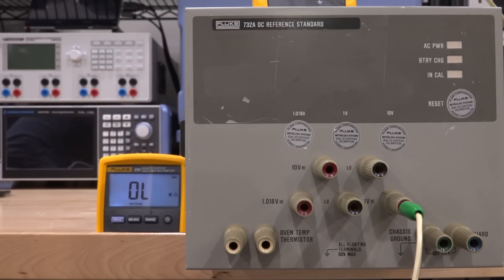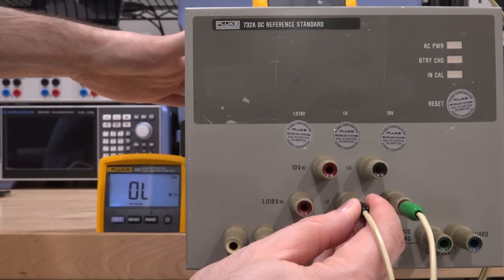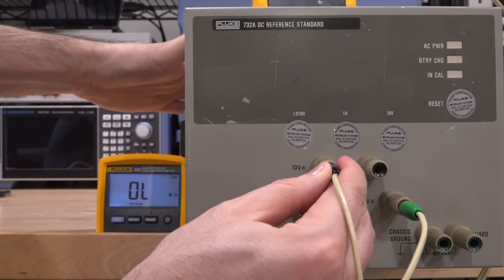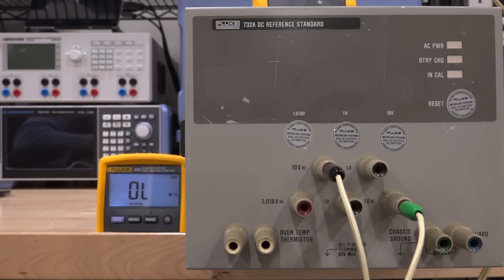Let's measure some of these resistances. From the 1 volt that doesn't work, no matter which terminal I go to I never measure anything. Between the ground, between the 1.018 volt, between the 10 volt, absolutely nothing. So that means that multiple resistors would have to either have failed or the connection to the terminal post itself is actually severed.